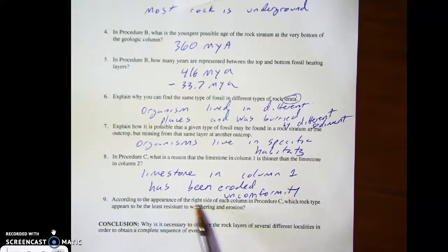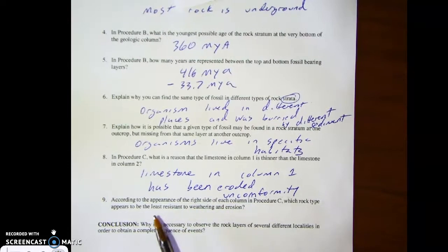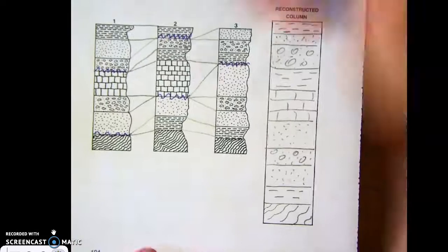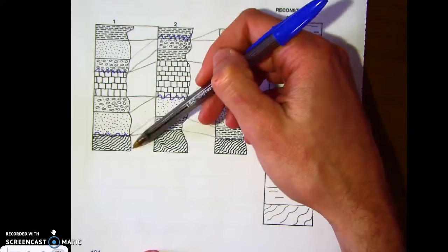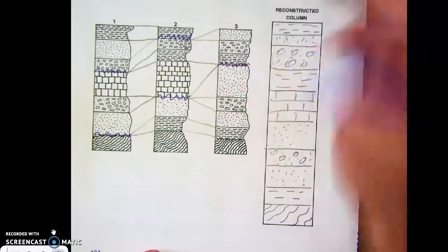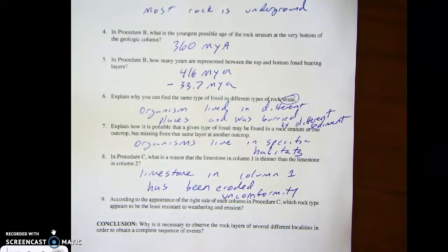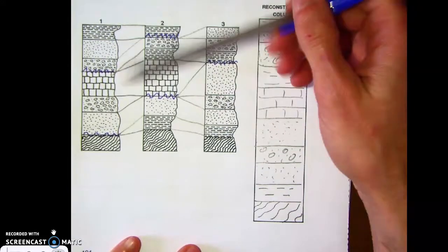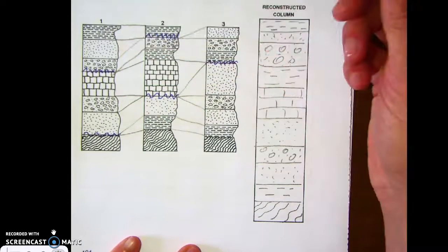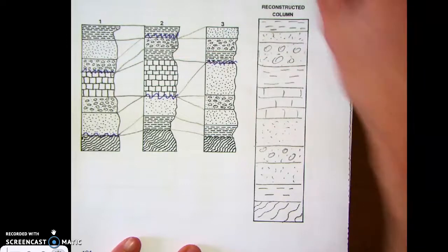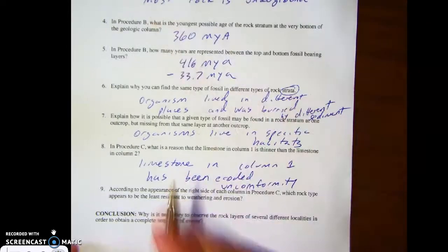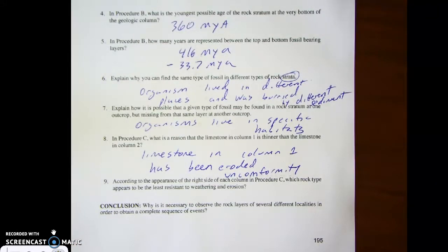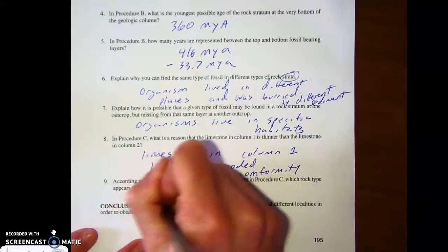And then for number nine, it says according to the appearance of the right side of each column in procedure C, which rock type appears to be the least resistant to weathering and erosion? Well, this is an idea we talked about when we were in the classroom. If we look at the sides of these columns, it's showing how much they've weathered and eroded. The one that's weathered more than any other would be the shale. The shale weathers more, and that's just simply because it has those layers. Water gets in the layers, freezes, expands. We have frost action, frost wedging. So the shale weathers the most.